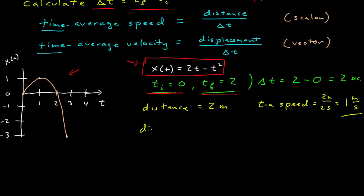What's the displacement? The displacement is the final position minus the initial position. The final position at t equals 2 seconds is 0, and the initial position at t equals 0 is 0. Therefore, the displacement is 0 meters, and the time average velocity is 0 meters over 2 seconds, or 0 meters per second. So if the displacement is 0, the velocity is 0.